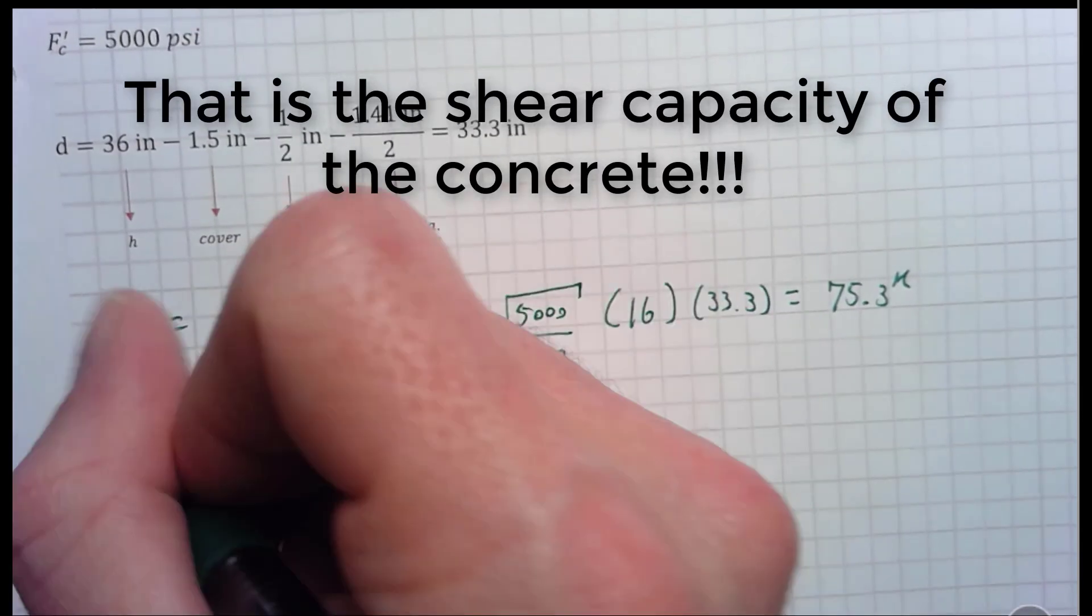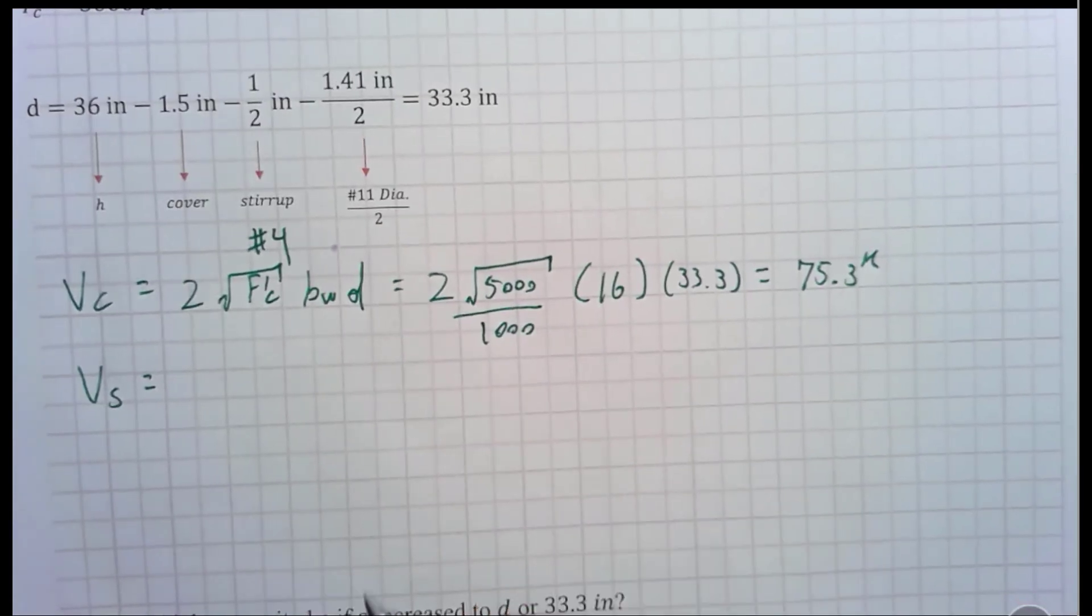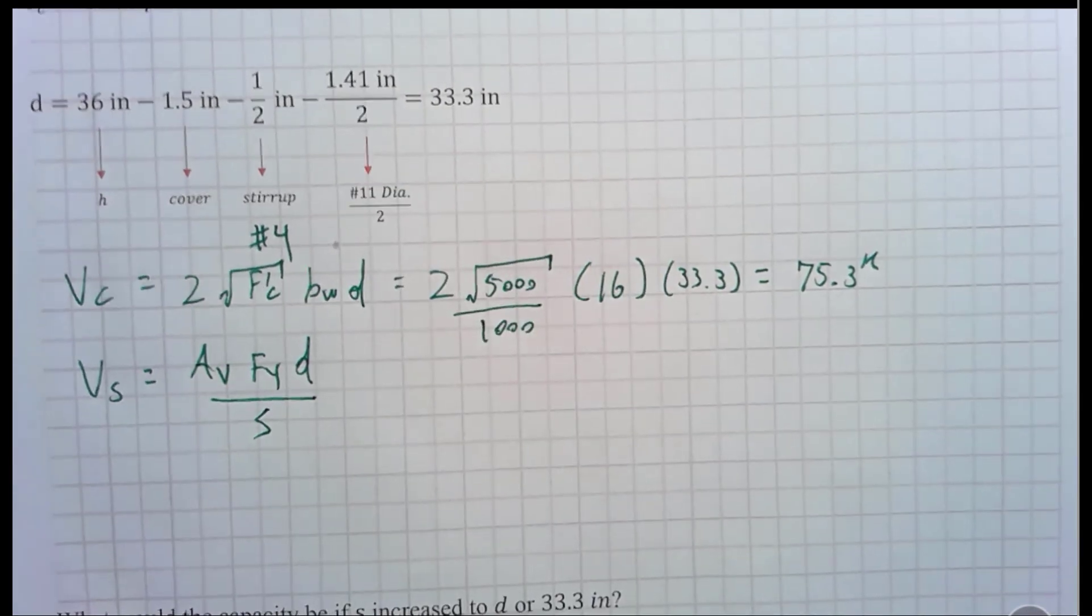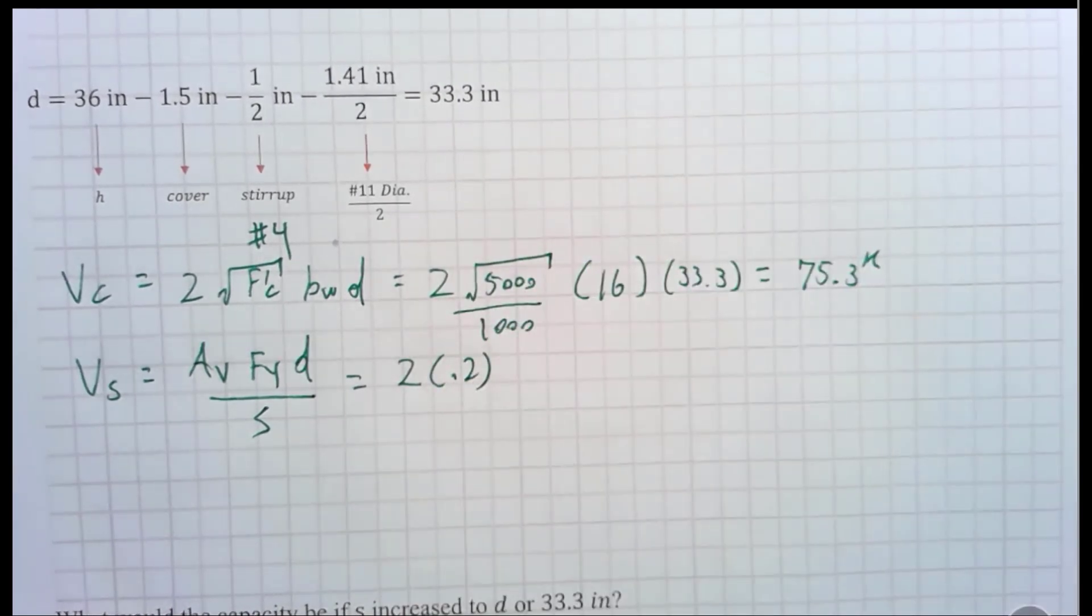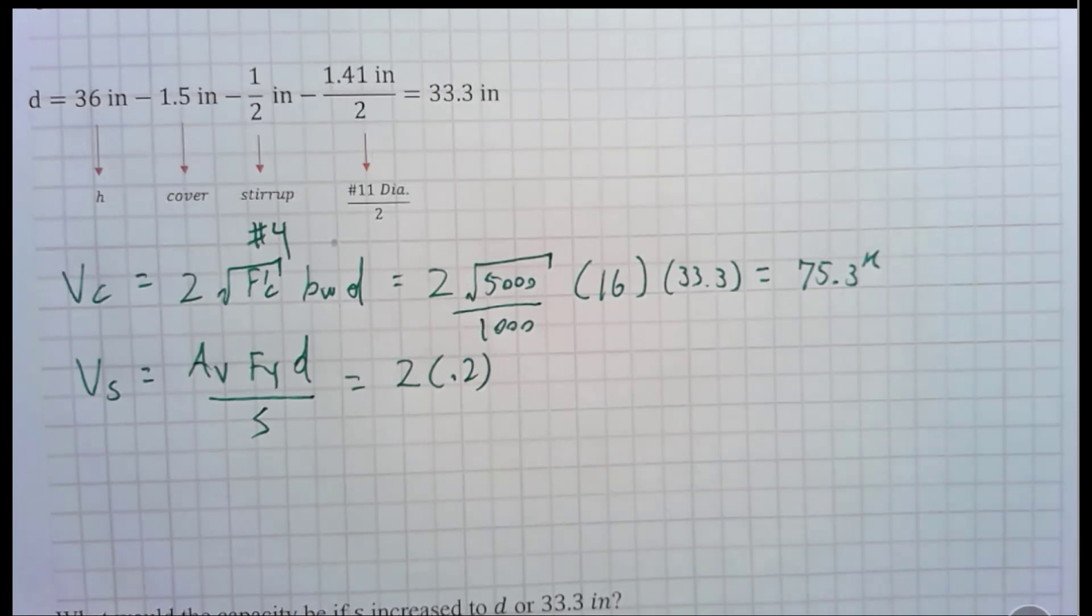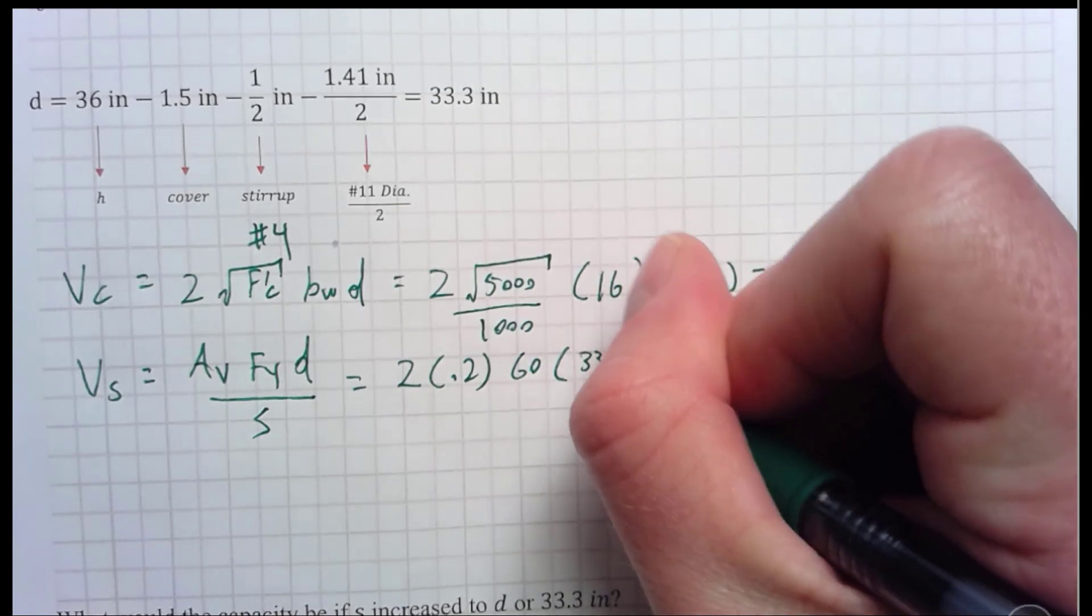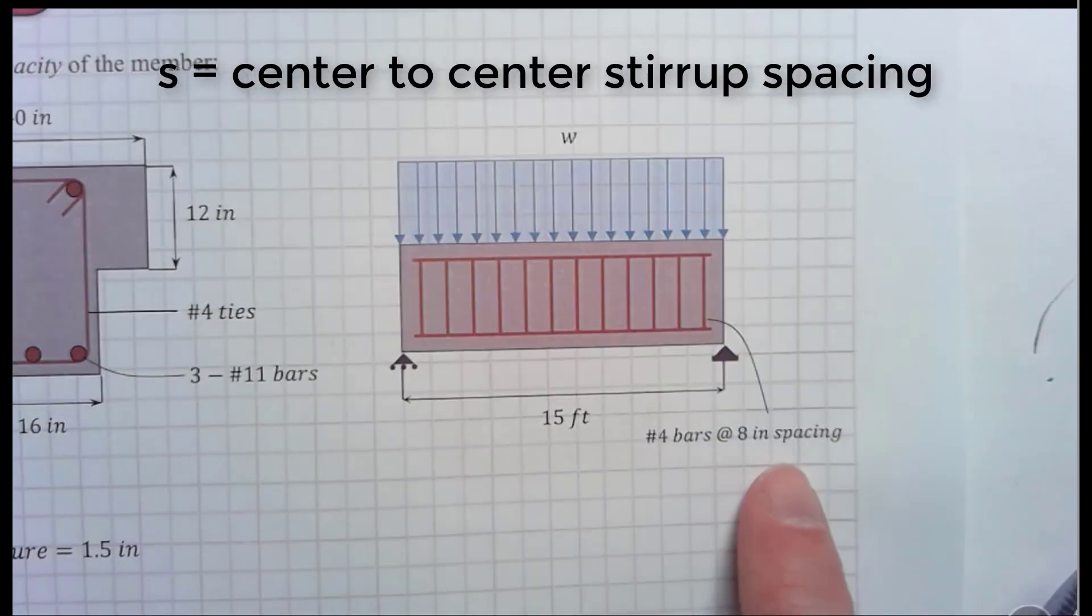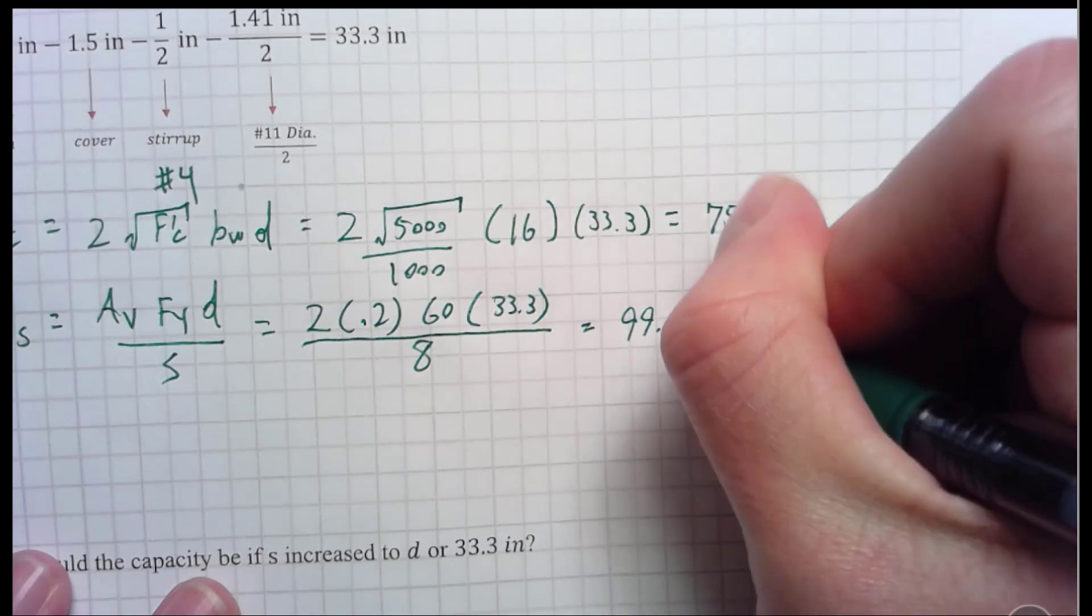Now, let's find V sub S. That is the capacity of the steel in shear, the contribution of the steel in shear. That's equal to Av*Fy*d all divided by S. That is the equation. Check previous videos if you want to learn how that's derived. So, to find Av, it is 2 times 0.2. Now, why is it 2? Well, the area of the number 4 bar is 0.2 inches squared, and there are two legs, right? That's why it's 2 times 0.2. Then, the Fy is 60 KSI. My d is 33.3, and my S. What is S again? Well, that is the spacing of the stirrups, and that happens to be 8 inches for this problem. And that whole thing is equal to 99.9 kips.